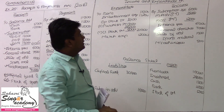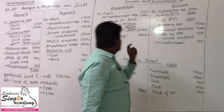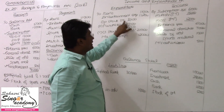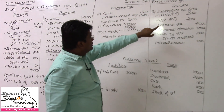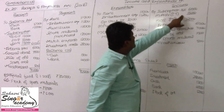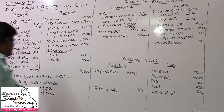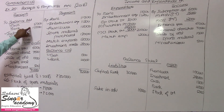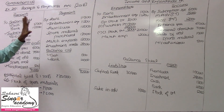Previous year value: outstanding subscription 12,000 plus opening stock of sports material 3,000 — that is asset side — so 12,000 plus 3,000 = 15,000 for the previous year. There will be opening cash balances as well: 15 plus 15 = 30,000.